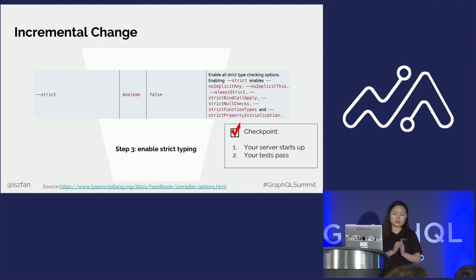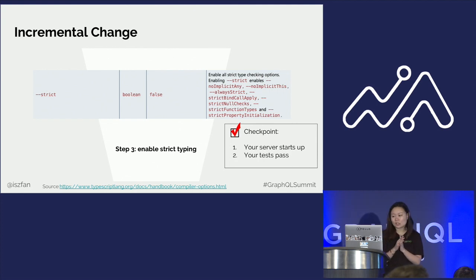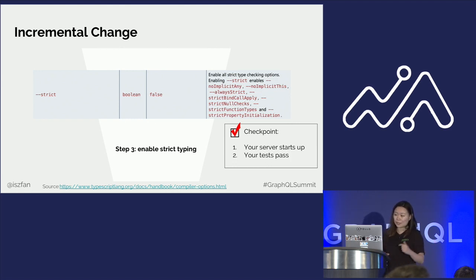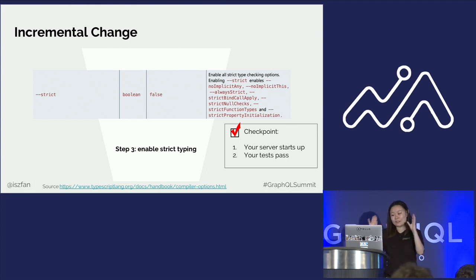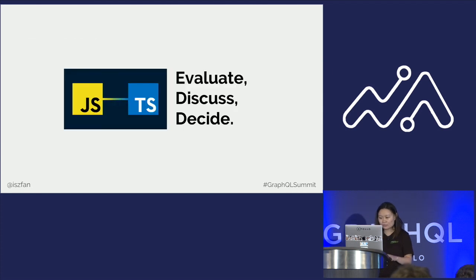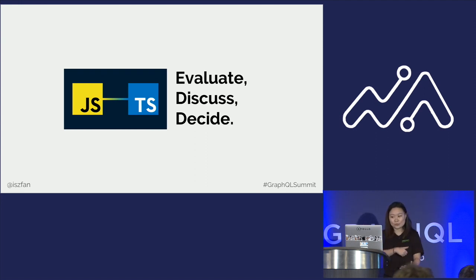The last step is to enable strict typing. In tsconfig.json, there's a strict option you can flip to true. This enforces noImplicitAny but also enforces null checks, bind/call/apply, functional types, and more strict type checking. This is the stage where you add more, stricter types on top of what you already added in step two. After this, you've finished refactoring this file or folder, and you're ready to go.